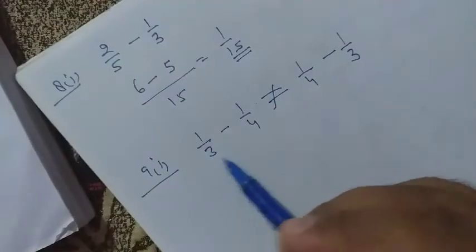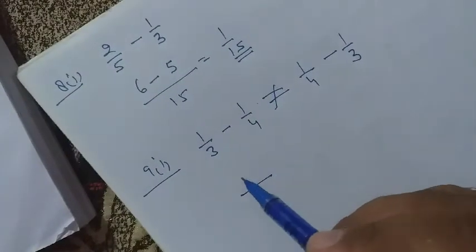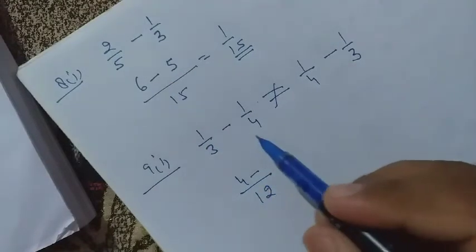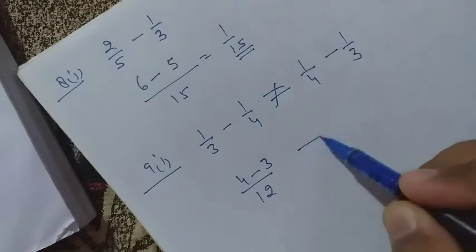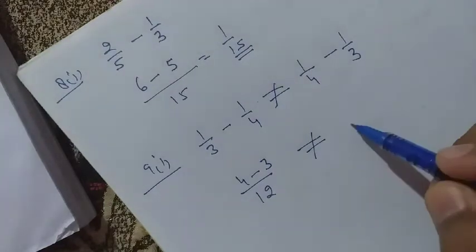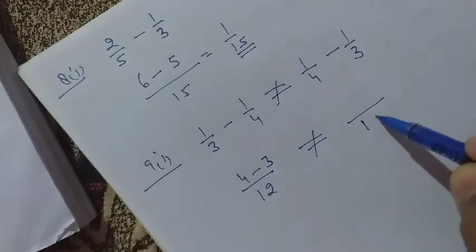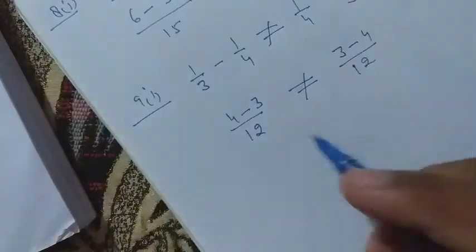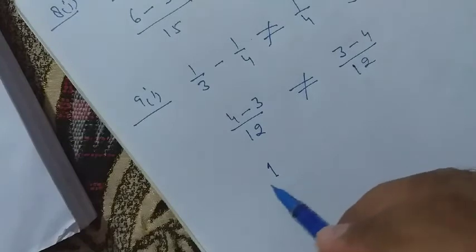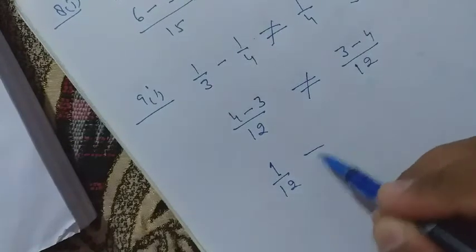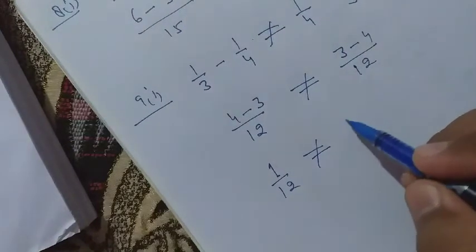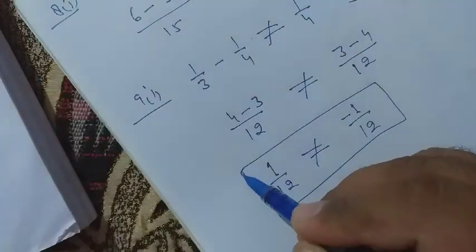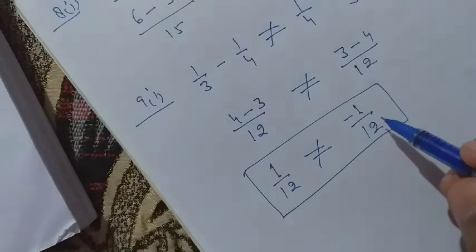So here we take LCM 12, here 4 minus 3, so 4 minus 3 is 1 upon 12 not equal to, 1 upon 12 not equal to minus 1 upon 12. So it is verified here because it is plus 1 and it is minus 1, so it is verified that these two rational numbers are not equal.